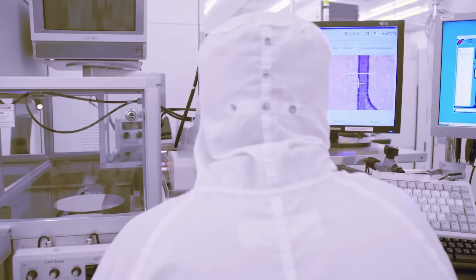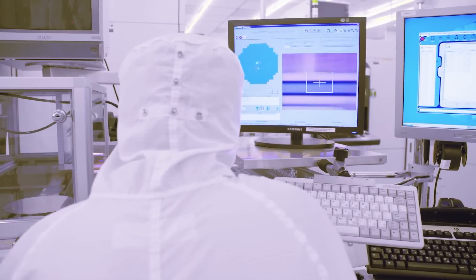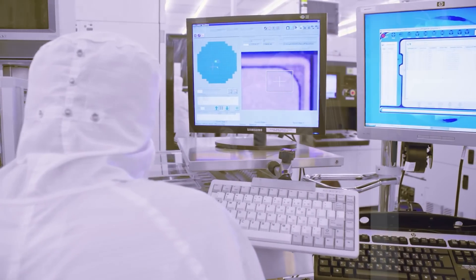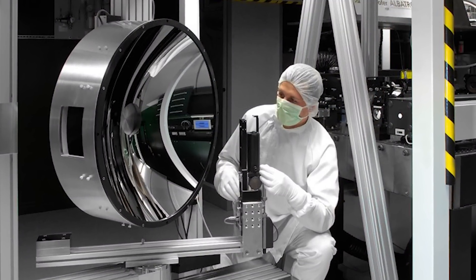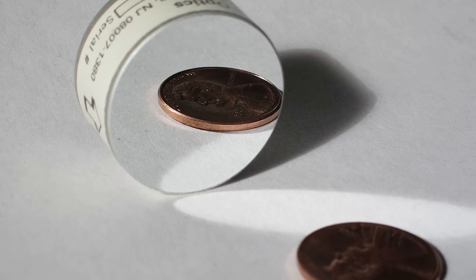Many of the key components in their EUV machines are particularly difficult to make, and the manufacturing techniques are closely guarded secrets. The mirrors, for example, are made by famous German company Zeiss in partnership with ASML. These things are the flattest structures humans have ever made.